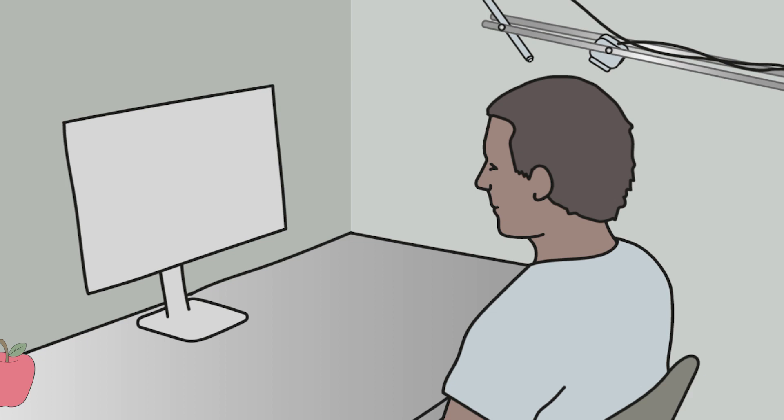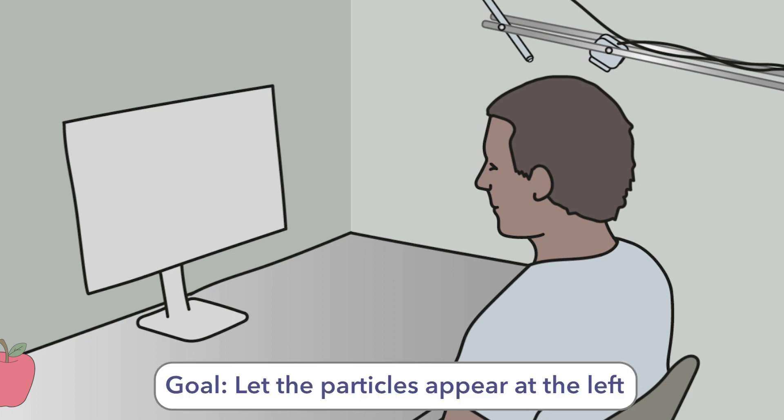The person is instructed to try to let the light particles appear to the left of the screen. They can try everything they can do with the mind. For example, deciding to think about a house or a pleasant memory. The location of the reflected light particles appear at the screen and informs the person if they manage to let it appear at the left.